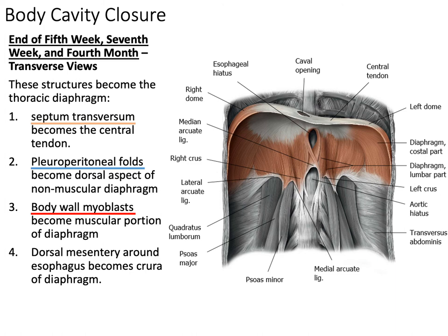Our diaphragm in its adult form has a lot of different vasculature and innervation. Seeing that it is formed from four different embryological aspects, it makes sense that there isn't just one primary innervation. That explains why, rather than having one nerve, one artery, and one vein, the diaphragm is innervated, irrigated, and drained by multiple sources — because it developed from multiple different parts of our embryological self.